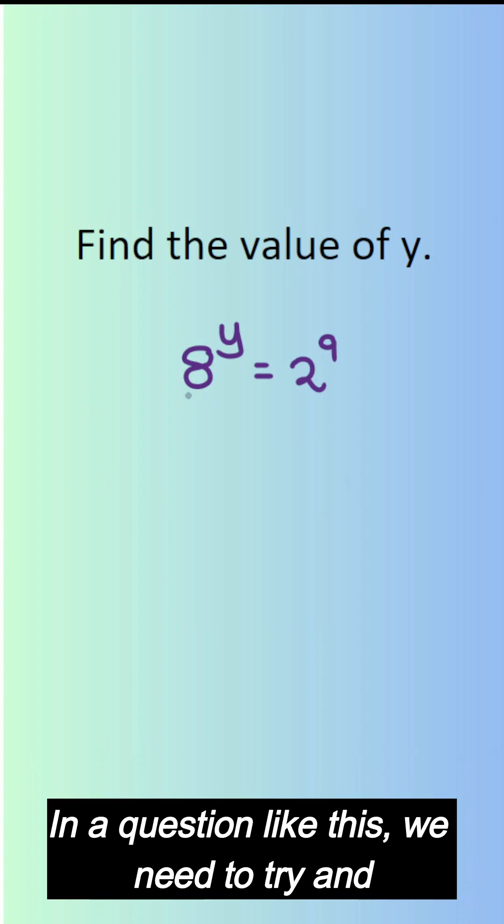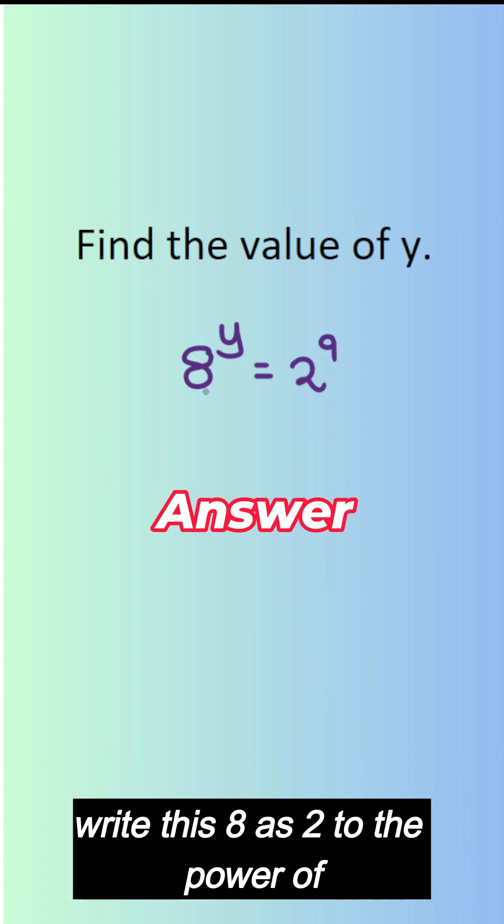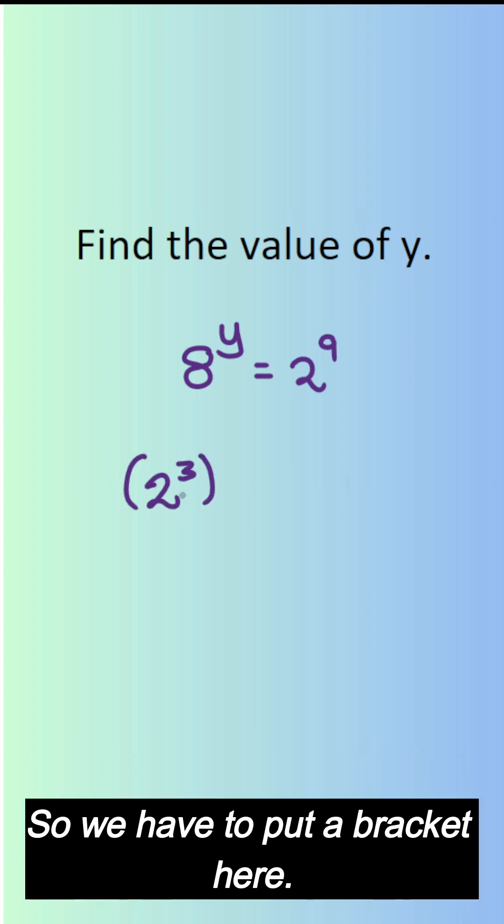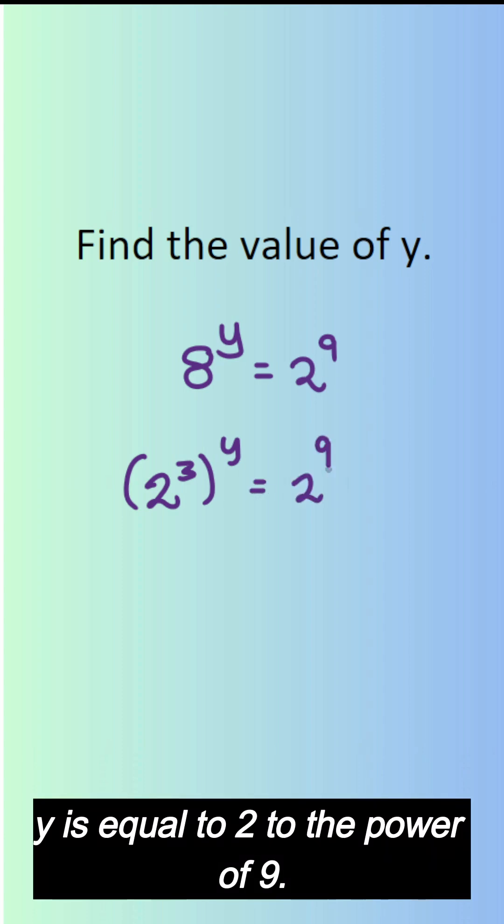In a question like this we need to try and write this 8 as 2 to the power of something. But we know 8 is 2 to the power of 3 to the power of y, so we have to put a bracket here, y is equal to 2 to the power of 9.